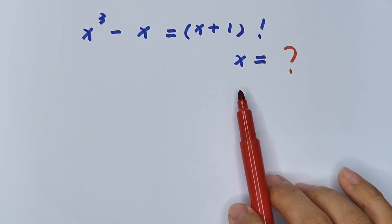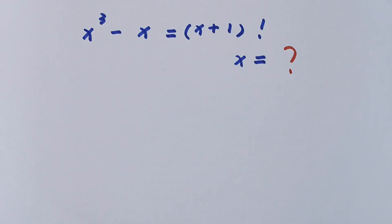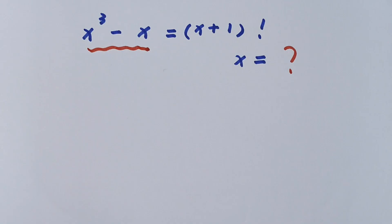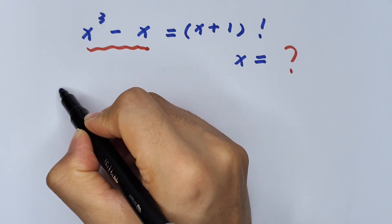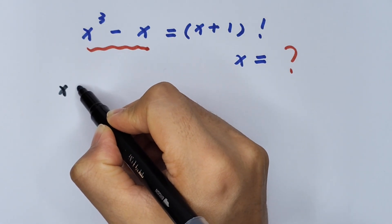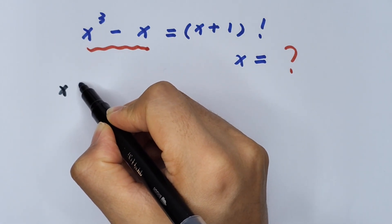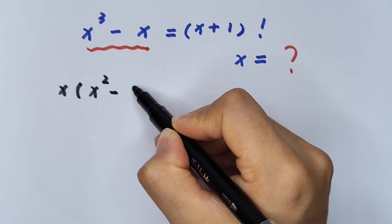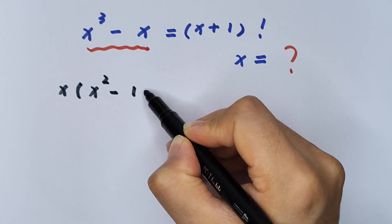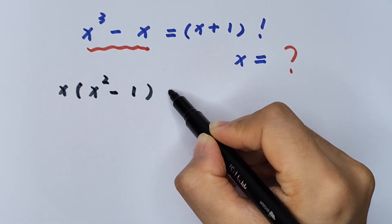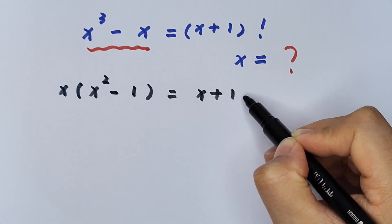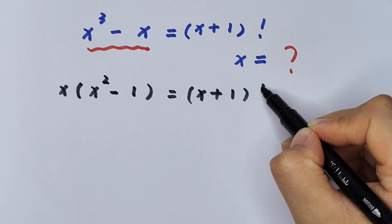To find the value of x, first we look at the left side. x is common, so we can take x out of the bracket: x(x² - 1) = (x + 1)!